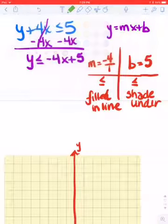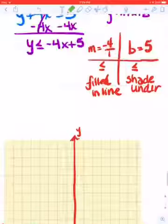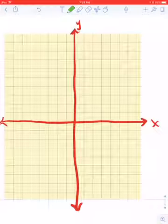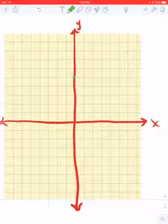So now we're going to go to our graph and actually graph this. So I'm going to start with positive 5. So 1, 2, 3, 4, 5. There's my first point.